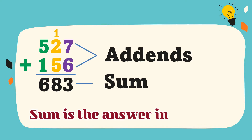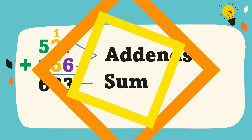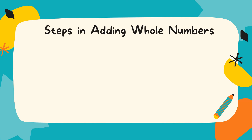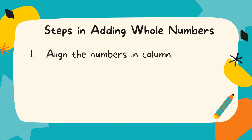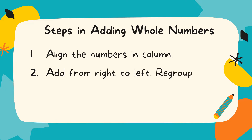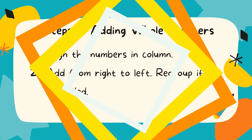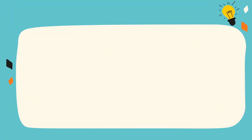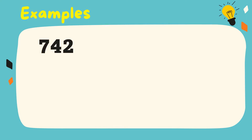Sum is the answer in addition. These are the steps in adding whole numbers: Number 1, align the numbers in column. Number 2, add from right to left, regroup if it is needed. To understand further the steps, let's study some examples.